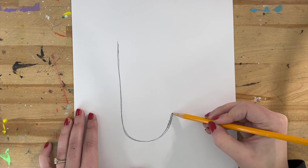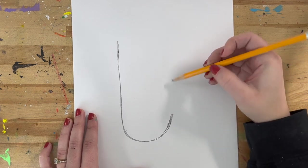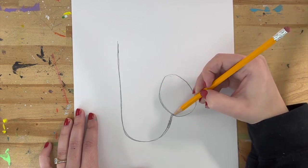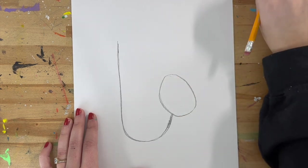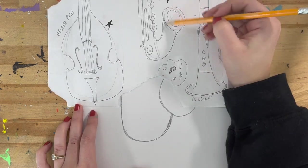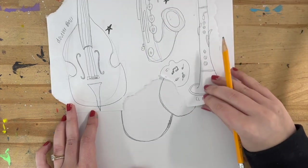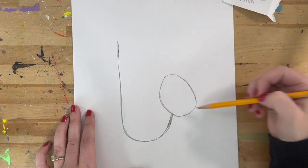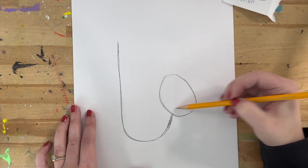Now at this part, at the top of the hook, the pointy part, you're going to draw a diagonal oval and that's going to be the horn of the saxophone where the noise comes out. It amplifies the noise. So backwards J and a circle or an oval.